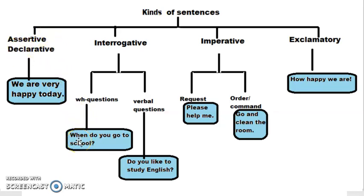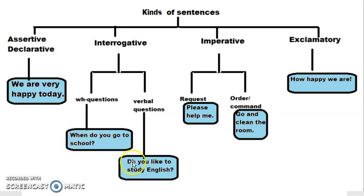Now interrogative sentences. 'When do you go to school?' — this is a question. 'Do you like to study English?' — this is also a question. But what is the difference? The first is a WH question. Its answer would be 'I go to school at 7 o'clock' or 'in the morning.' The second is a yes-no type question — a verbal question. So in interrogative sentences there are two subclasses: WH questions and verbal questions.